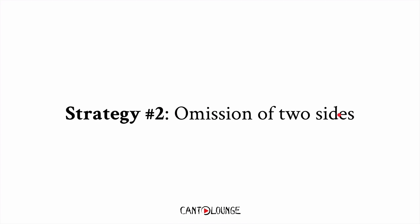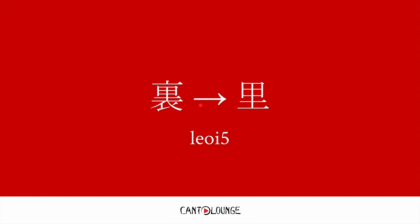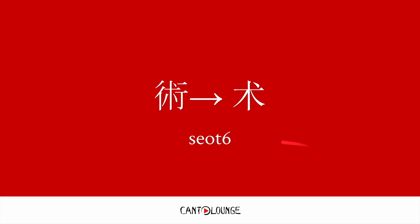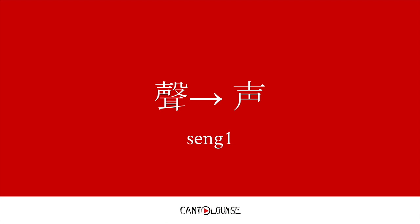Strategy number two is an omission of two sides of a character. Here we have an omission of this little bit here and this bit at the bottom. This is 女, meaning inside. We had alternatively an omission of the left and the right bits of 術, meaning skill or technique of some sort. And then for this character, we omitted the top right bit and the bottom bit, 生, which means sound.